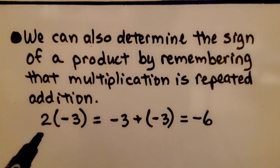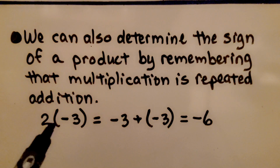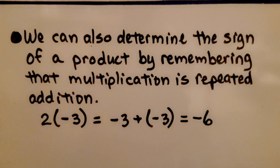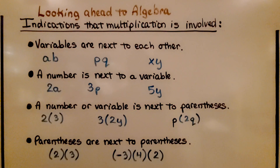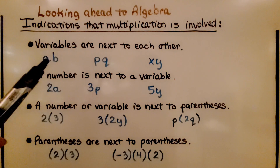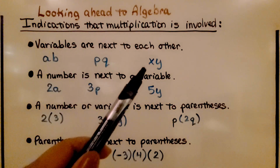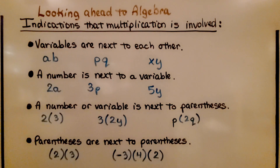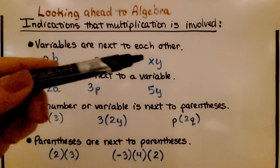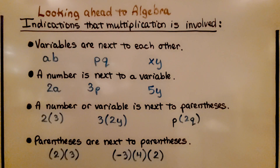We can take their absolute values and do two times three, which is six. We see there's one negative, so we know we have negative six. Looking ahead to algebra, here are some indications that multiplication is involved. When variables are next to each other — like a next to b, or p next to q, or x next to y — we know that multiplication is involved. This means a times b, and p times q, and x times y. Remember, variables are just letters of the alphabet that take the place of an unknown amount.